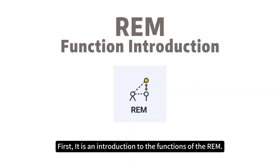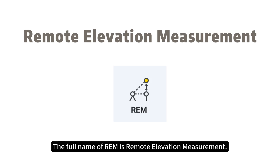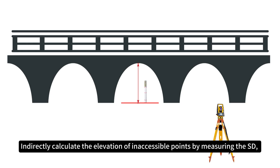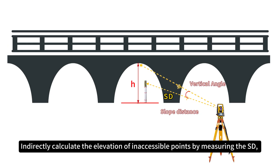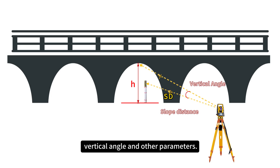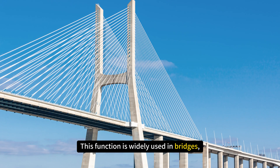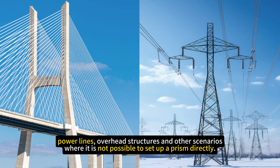First, it is an introduction to the functions of REN. The full name of REN is Remote Elevation Measurement. It indirectly calculates the elevation of an inaccessible point by measuring the SD, vertical angle, and other parameters. This function is widely used in bridges, power lines, overhead structures, and other scenarios where it is not possible to set up the prism directly.